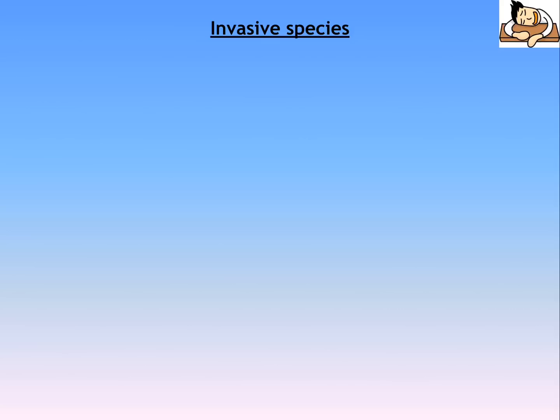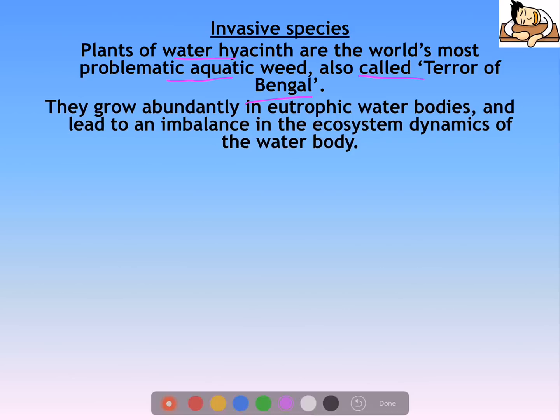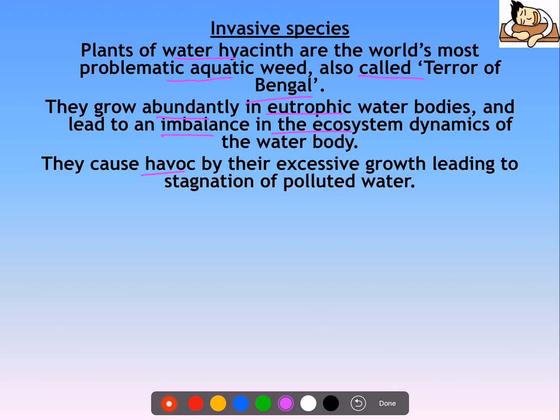Another form of water pollution involves invasive species. Water hyacinth is considered the world's most problematic aquatic weed, called the 'terror of Bengal.' It grows abundantly in eutrophic water bodies and leads to an imbalance in the ecosystem dynamics. It fills the entire water body, and its excessive growth leads to stagnation of polluted water.